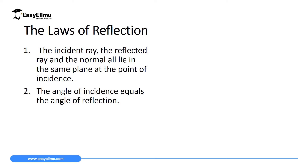We have two main laws of reflection. When we reach Form 2 we introduce the third law, the law of reversibility of light, but for the purpose of this topic we will discuss the two main laws. It's important to note that for the second law of reflection to be observed, the first law must be observed first — without it, the second law cannot exist.